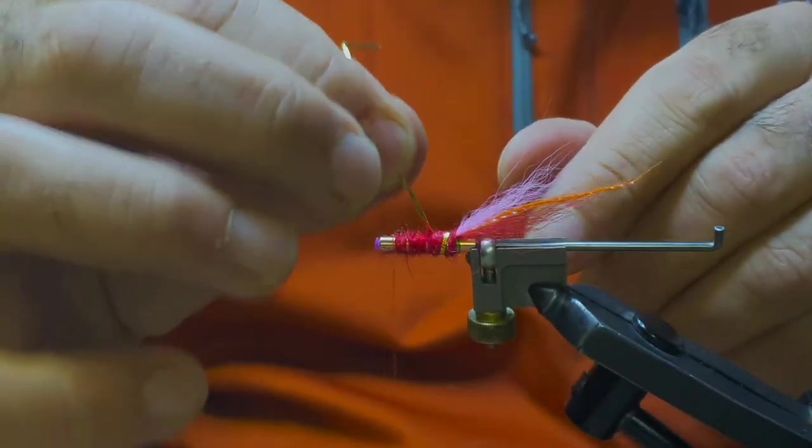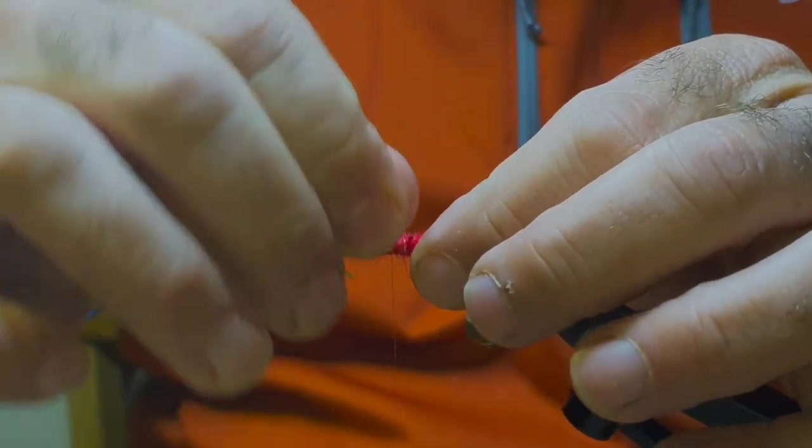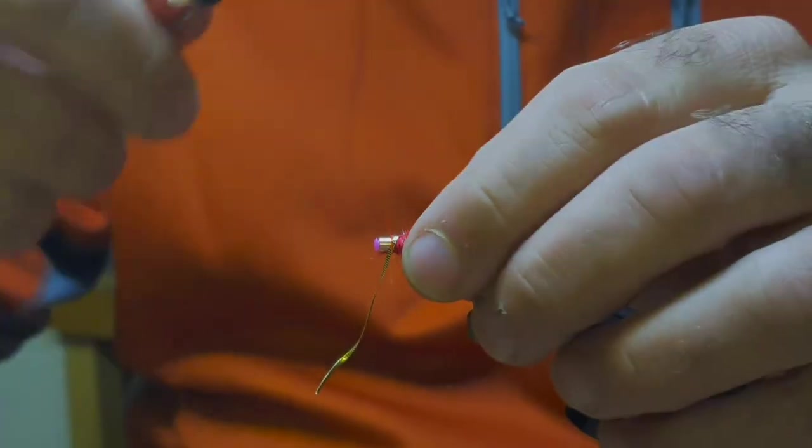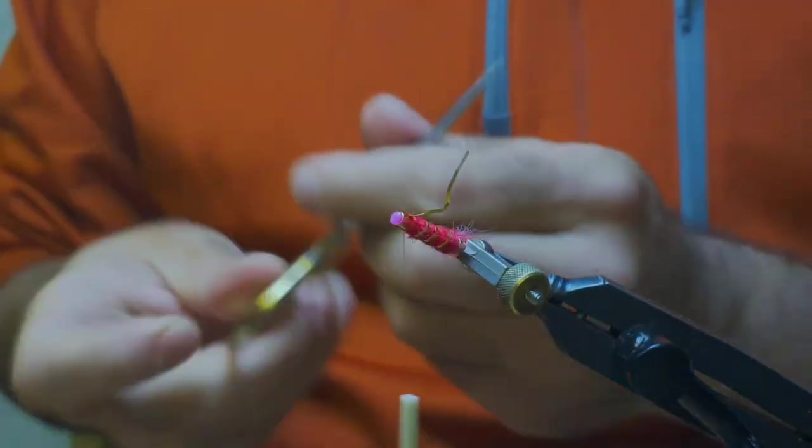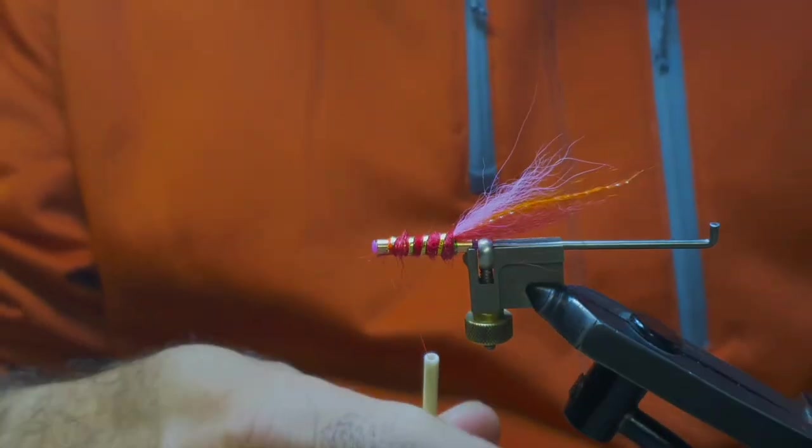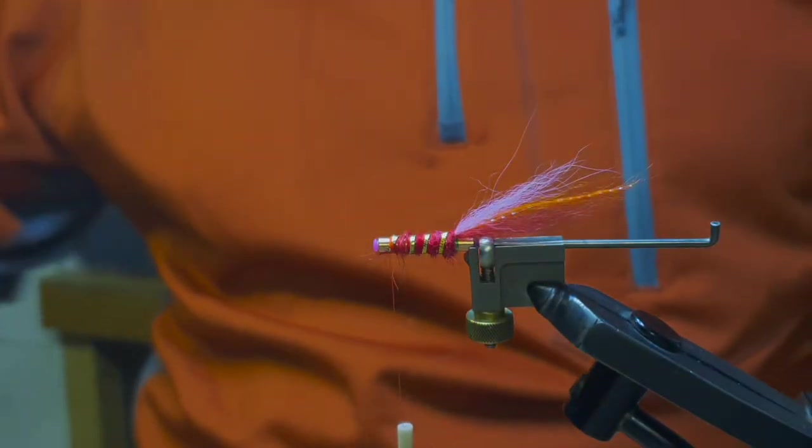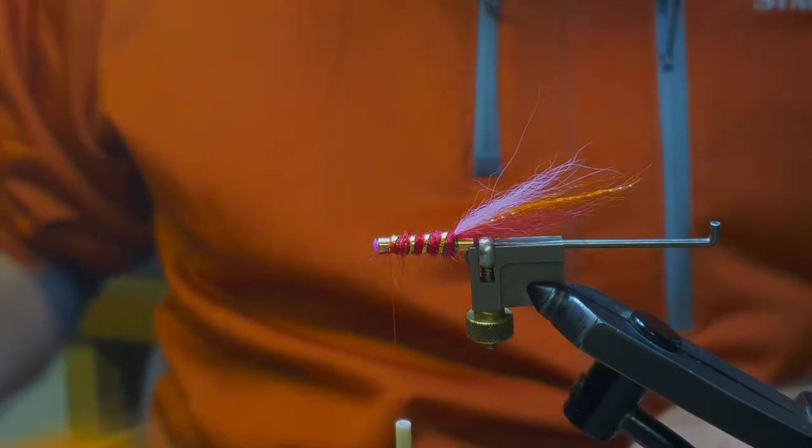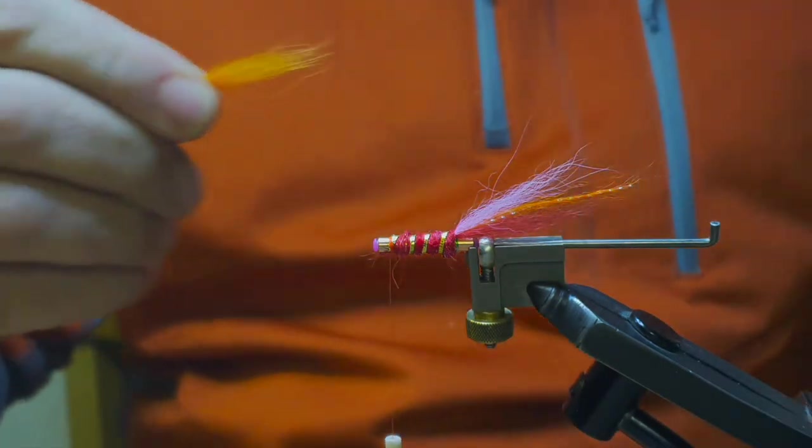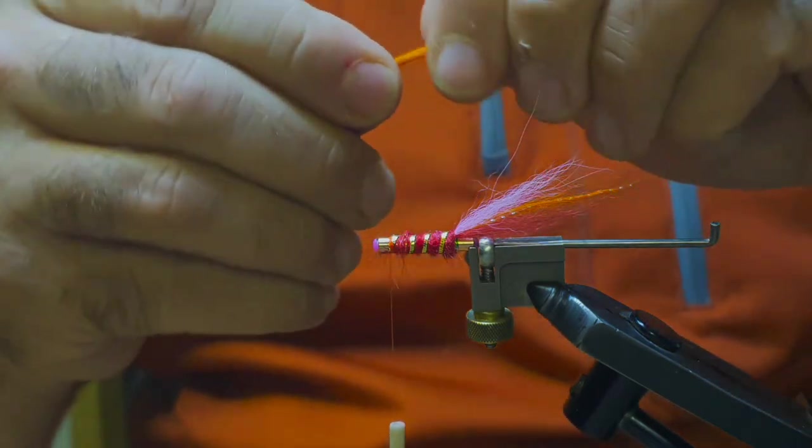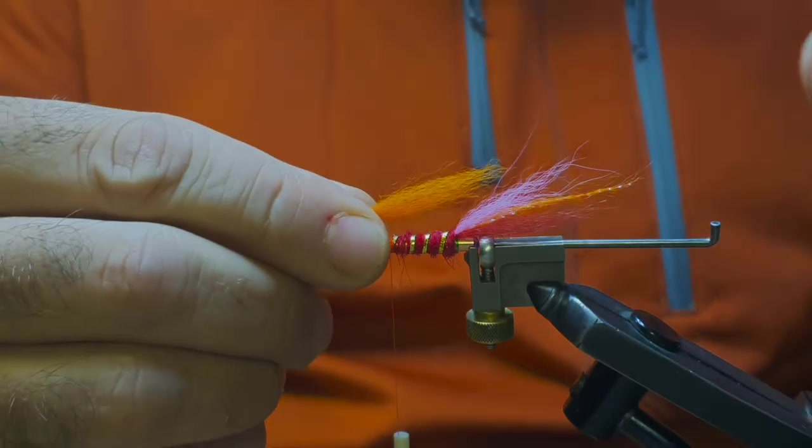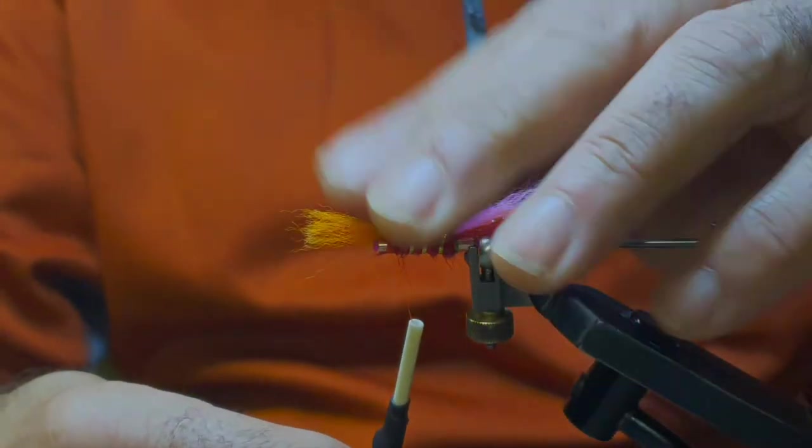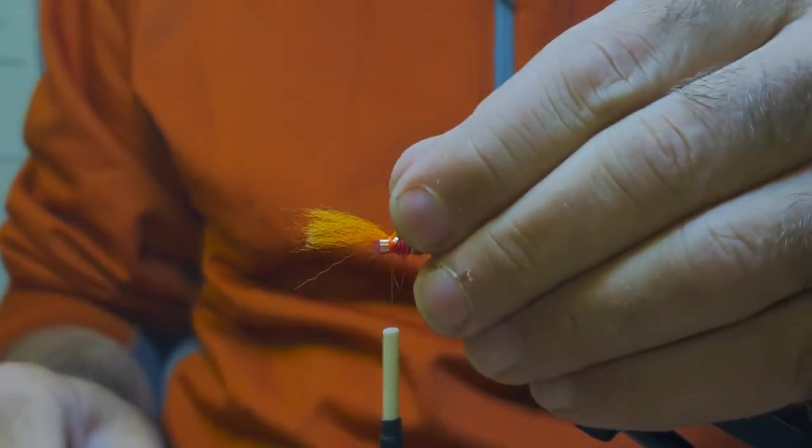So then come in with the rib, three or four turns. Two, three, I'll get four out of this. Four. Tie it off there. There we go. So now we'll go in with just a little short wing. The guard hairs out of that fox, and then just about there. Yeah that's fine, give it a wee bit longer. Perfect.